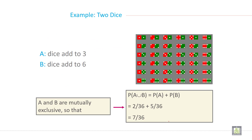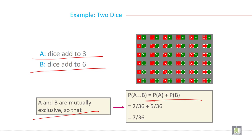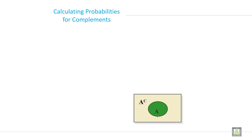Here, A is a dice sum equal to 3 and B is dice sum equal to 6. A and B are mutually exclusive events. So A union B equals probability of A plus probability of B: 2 by 36 plus 5 by 36 equals 7 by 36. This is the example of a special case of addition.